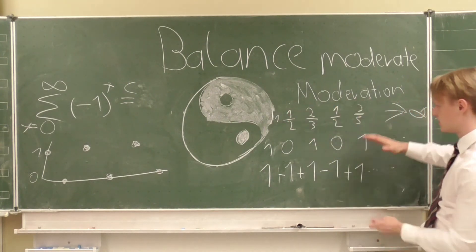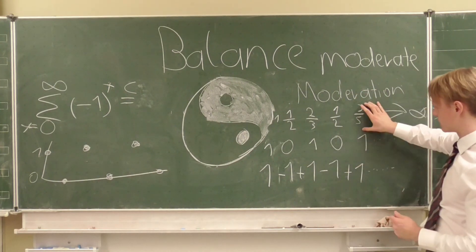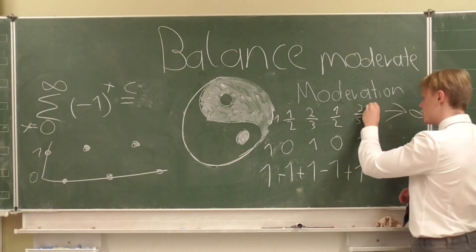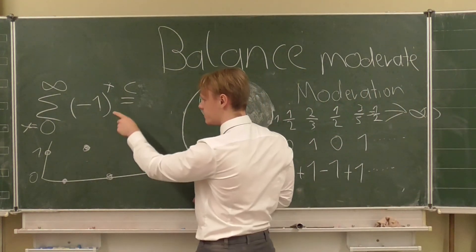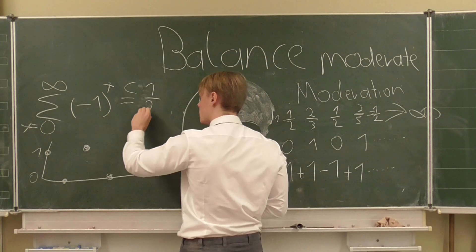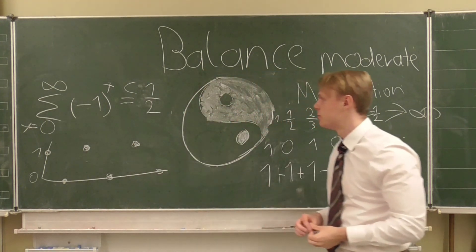This abstraction, this further level of abstraction is going to converge to one half. So if we look at this in a Cesaro conversion, the result is going to be one half.